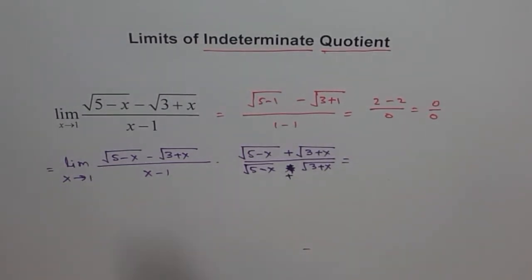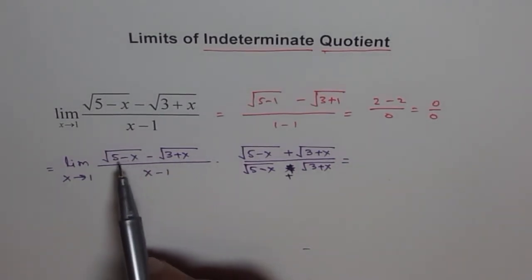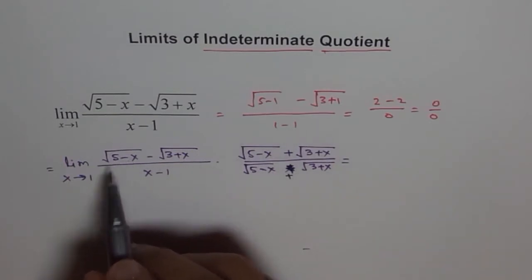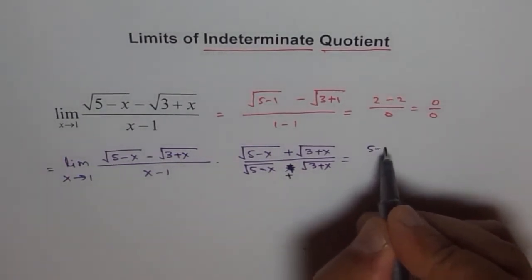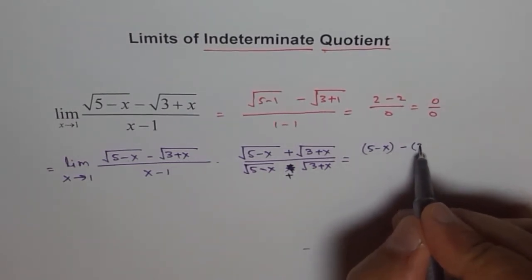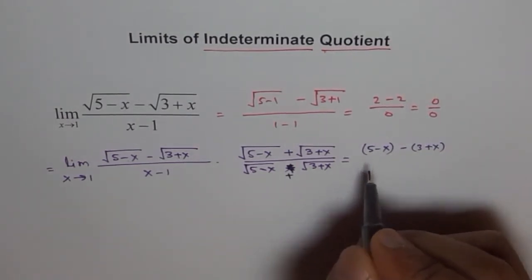Now when I multiply, I get a square minus b square. This is a minus b times a plus b. So a square, square root squared, we get 5 minus x here minus b square, which is 3 plus x.